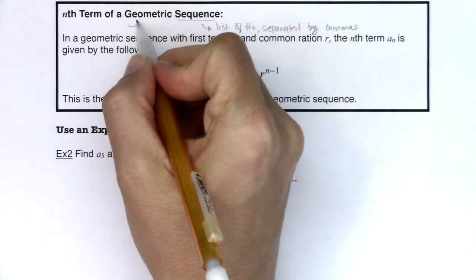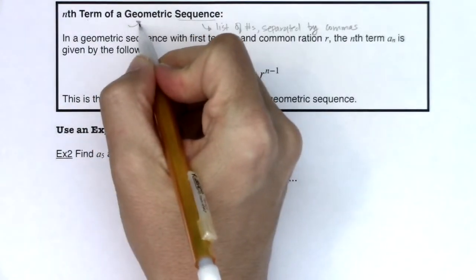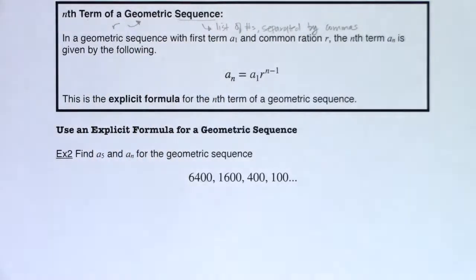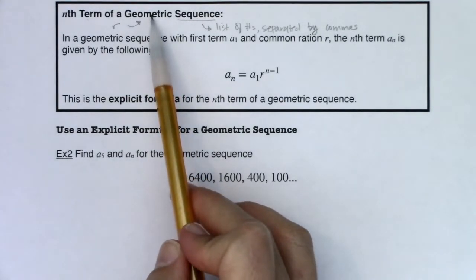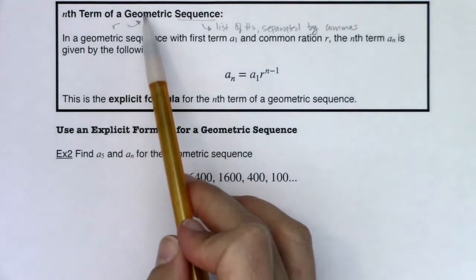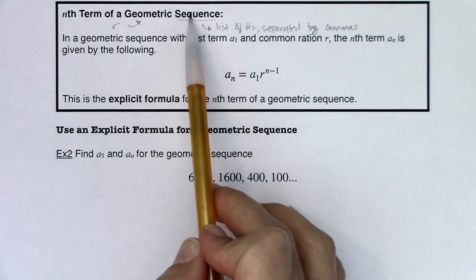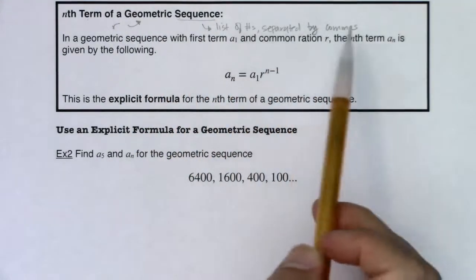And when you hear geometric, we're going to think of the letter R. We need a common ratio. Back in 9.2 when we had the word arithmetic, we looked for a common difference D, but when it's geometric, go R. And whenever you have sequence, it's a list of numbers separated by commas.